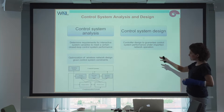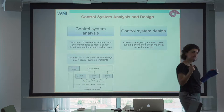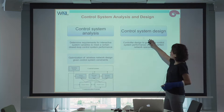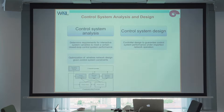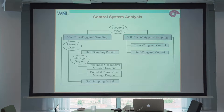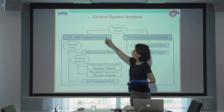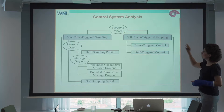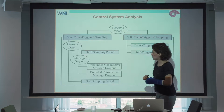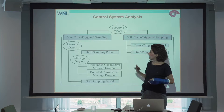For the optimization, you need to determine the requirements on the critical interactive variables for a certain control system performance. We classified all the work in control system design based on the sampling period — whether it's periodic or event-driven — giving two groups: time-triggered sampling or event-triggered sampling. We also classify time-triggered sampling into hard sampling period or soft sampling period.